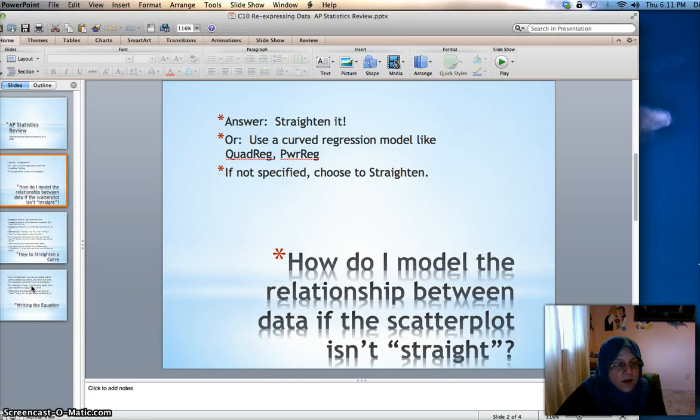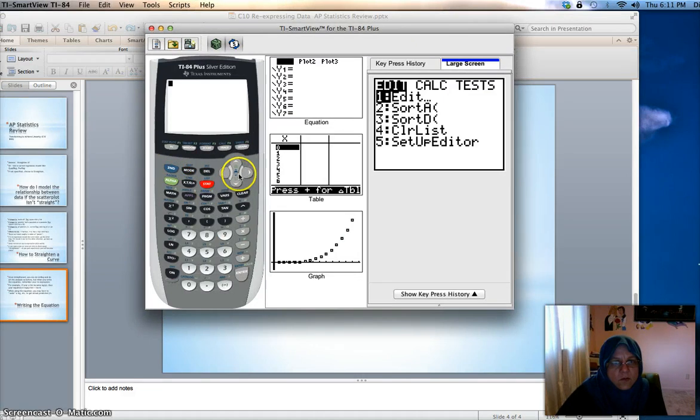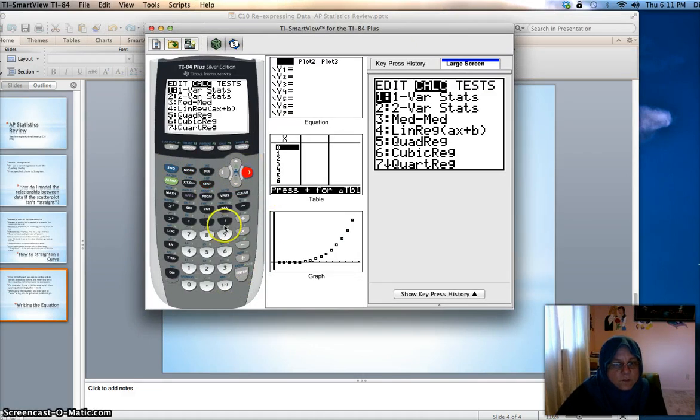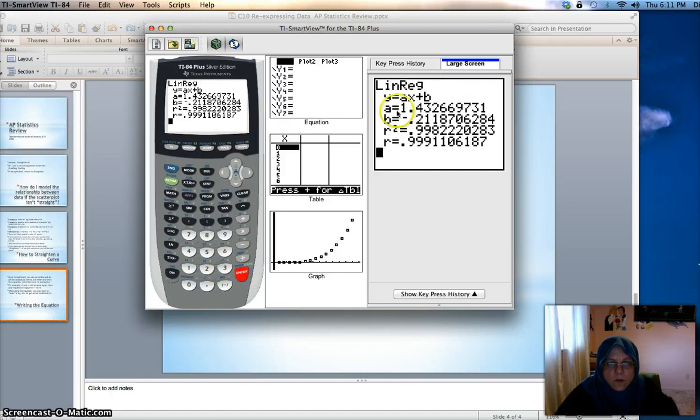So finally, we decided on the square root, right? Let's pretend we decided on the square root. Let's look at that equation. It was list one versus list five. This equation here says y equals 1.43x minus 0.211. But we had changed the y list. The y list that we actually used was L5, which was the square root of y. So when you write down your regression equation, it shouldn't say y equals mx plus b. It should say square root of y equals mx plus b or ax plus b, whatever letters you're using. Remember that we would usually write variable names instead of these.